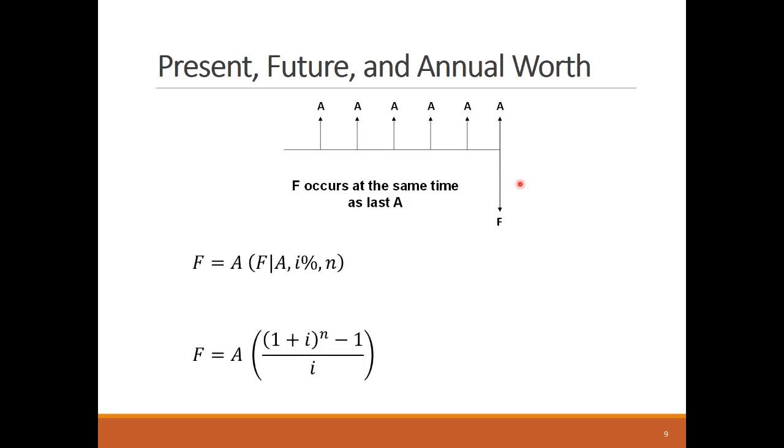To calculate the future worth of a uniform series, we need to multiply A with the factor F given A. The factor has its own formula as shown. The opposite process can happen by using the A given F factor. The uniform series future worth F represents the accumulated value of the deposit series over time, including the interest value.